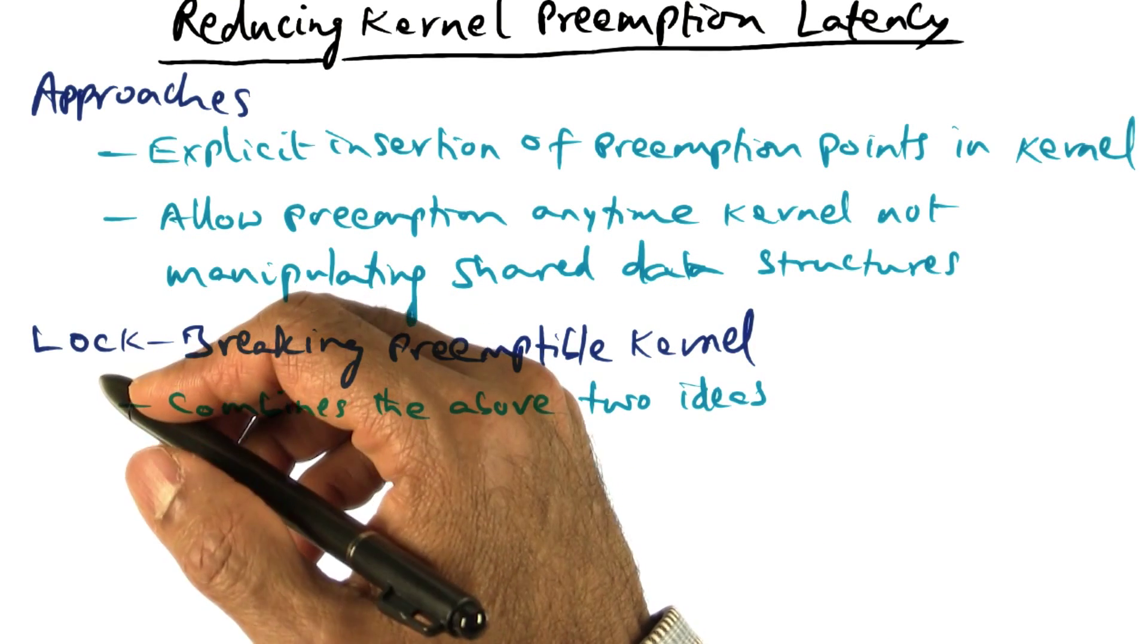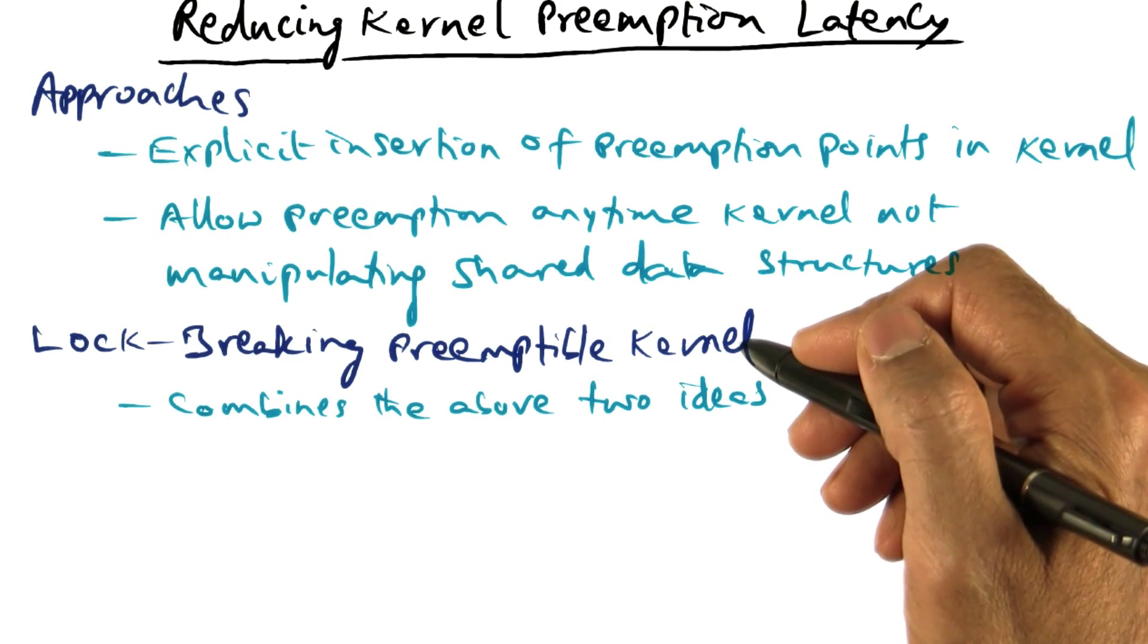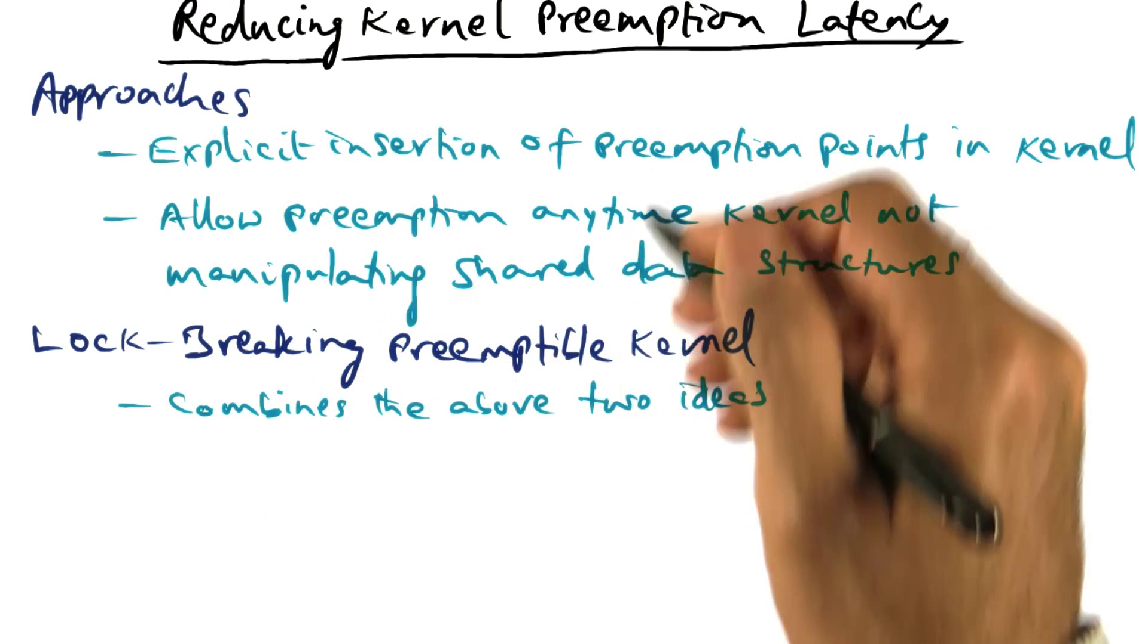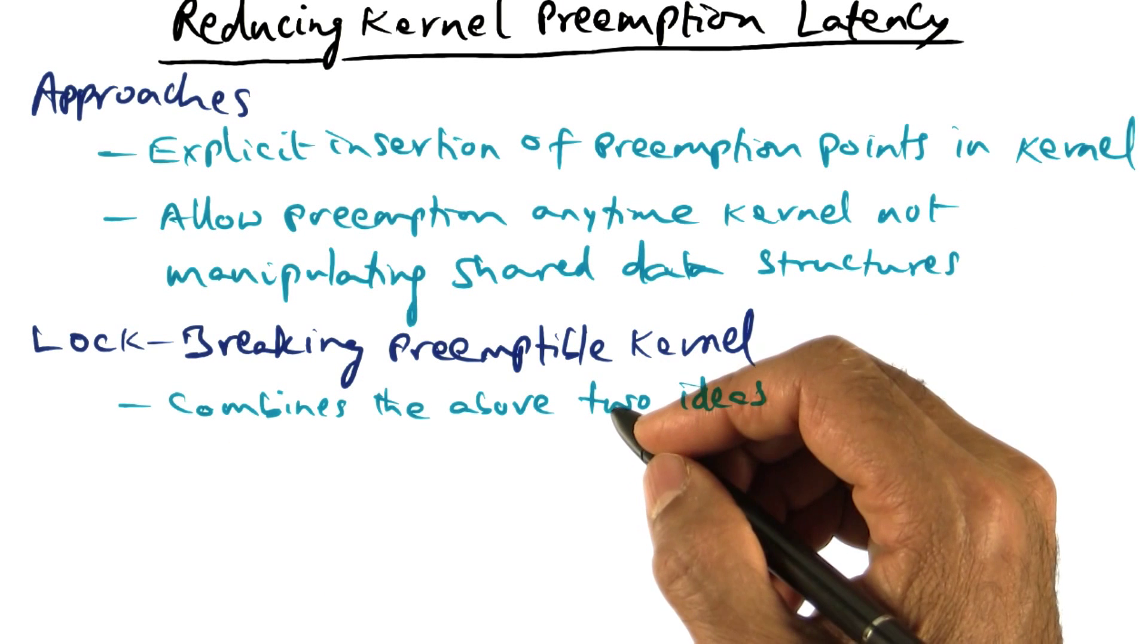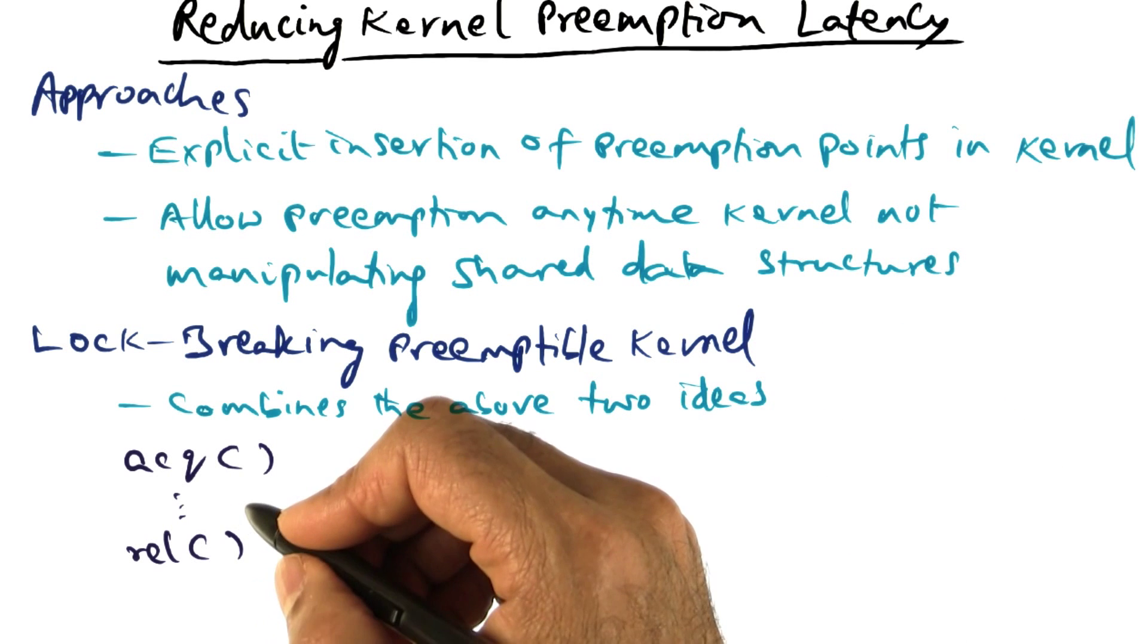A technique due to Robert Love called the lock-breaking preemptible kernel combines these two ideas. And by combining these two ideas, it reduces the spin lock holding time in the kernel.